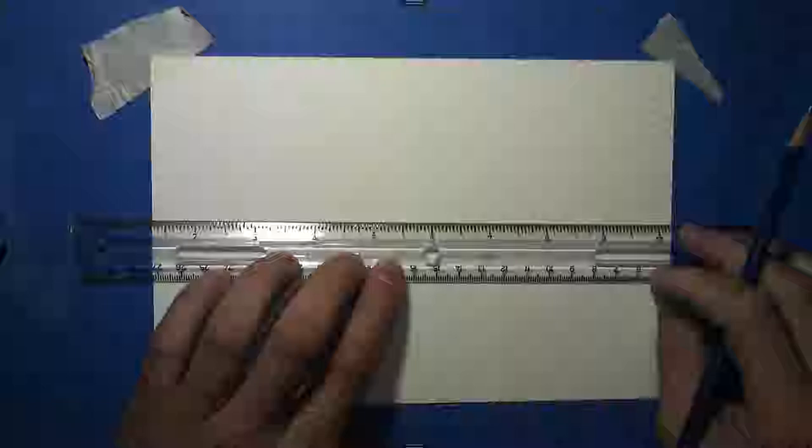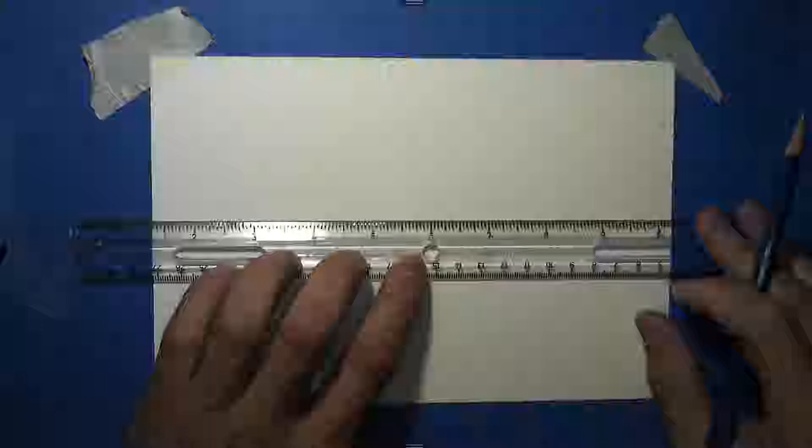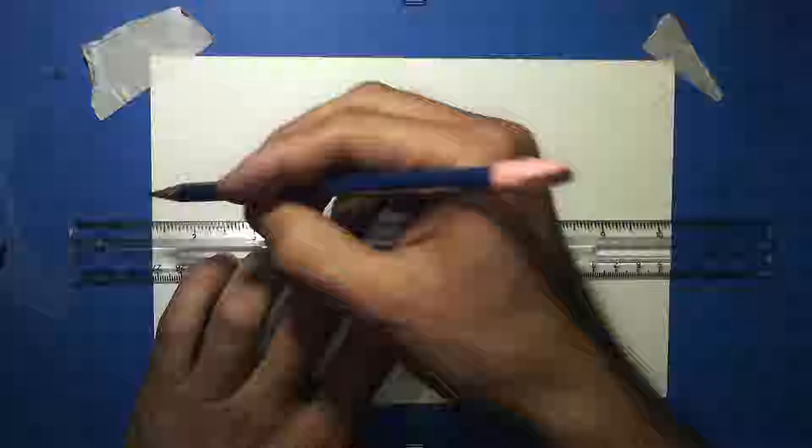Make sure your ruler is parallel to the paper — the edges of the paper. You know what parallel means? Parallel lines are lines that never meet. Make this line very light because you're going to erase most of it. Make a horizontal line in the middle of the page and put a point in the middle — this is our vanishing point.